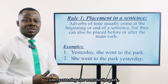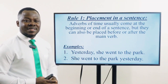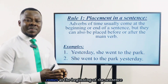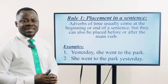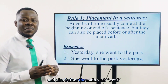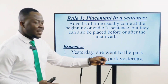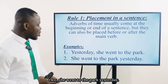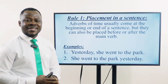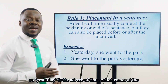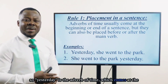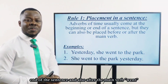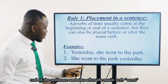Yesterday he went to the park. Yesterday is the adverb of time, which comes at the beginning of the sentence. She went to the park yesterday. Yesterday is the adverb of time, which comes at the end of the sentence, and also after the main verb went.